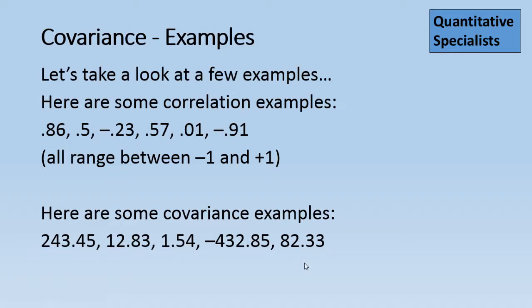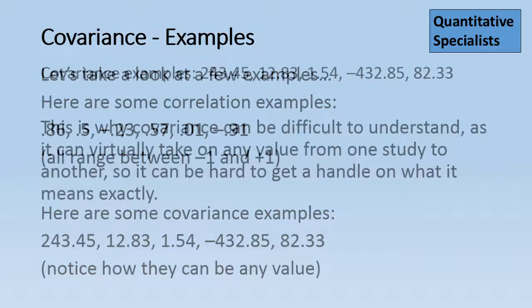So covariance can really take on any value as I had said before, whereas correlation is all bound by negative 1 to positive 1. This is what makes it hard to understand really what a covariance is when you get a value like negative 432 or 12. It can be hard to get a handle on that.